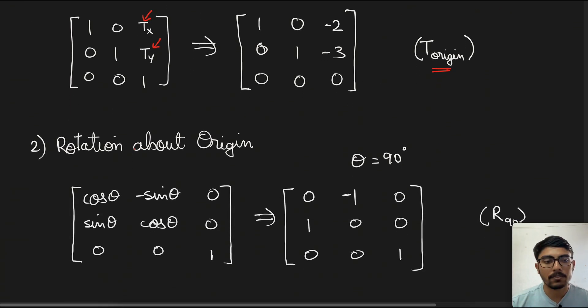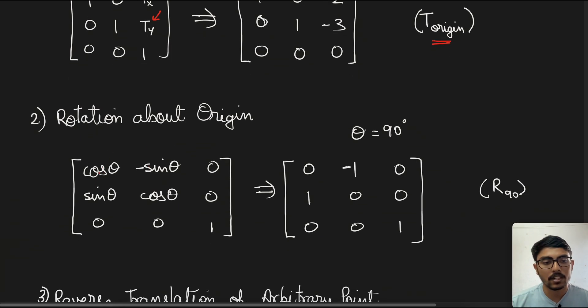Now we perform the second step, which is rotation about the origin. The standard rotation matrix is given here. In 2D space, we need to rotate by angle theta, so we use this particular matrix. If we put theta equal to 90 degrees, which is our case, we have this particular matrix. Let us denote it by R_90.